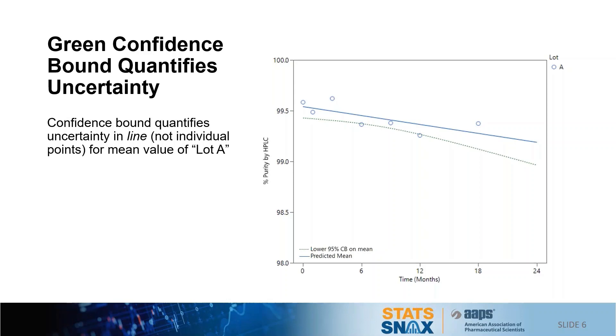Since we know there's uncertainty in the estimation of the regression line, a confidence bound can be calculated to quantify that uncertainty. A very important point, especially for people who are new to looking at stability data in this way, is that the confidence bound is on the line, not the individual points.